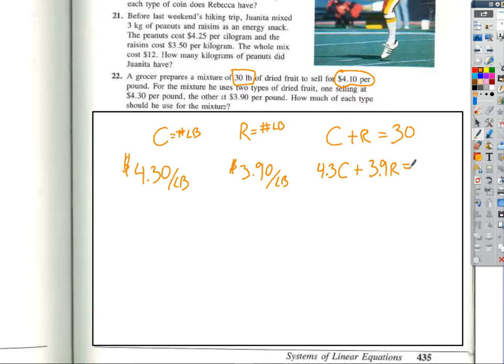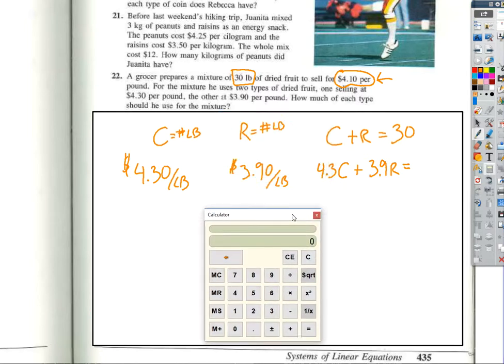So I'm saying that $4.30 times the number of pounds of cherries plus $3.90 times the number of pounds of raisins, because that's the cost per pound, is equal to, now wait a second. It tells us that we're going to be selling this thing for $4.10 per pound. What is the total cost of my 30 pounds? How would I figure that out? Paige? You do $4.10 times the number of pounds, 30 pounds. And so this is $123 of dried fruit.